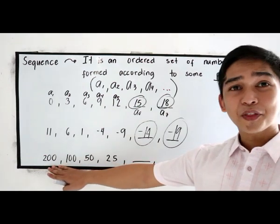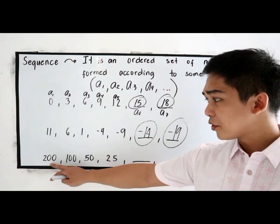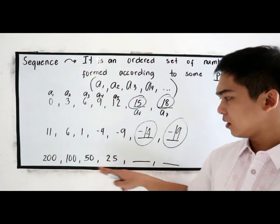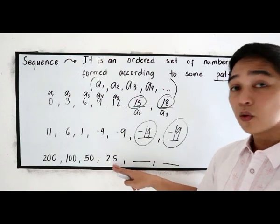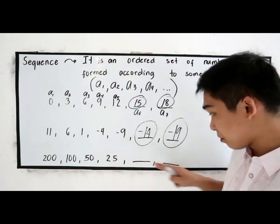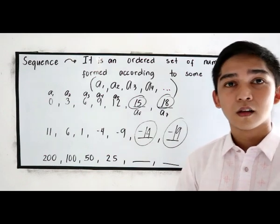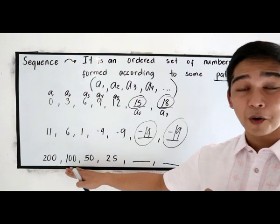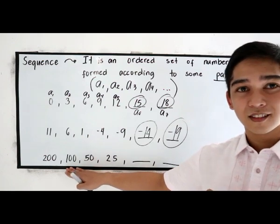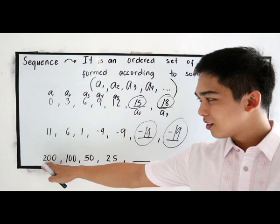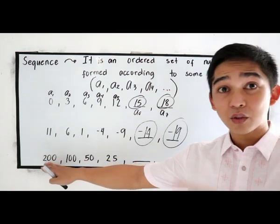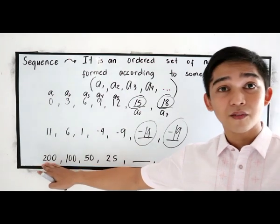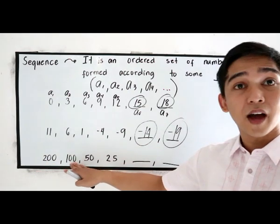Next pattern is 200, 100, 50, 25. We're going to find the next two terms. So what rule did we use in our pattern? If we're going to divide by 2, 200 divided by 2 will give us 100.